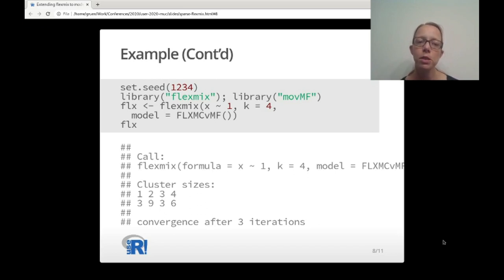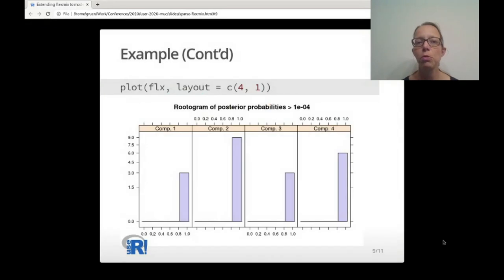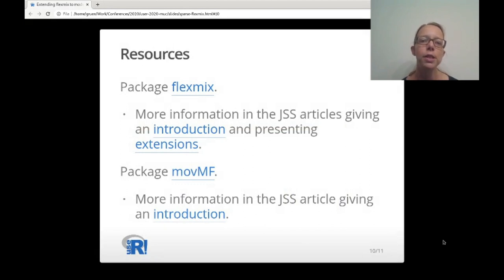Now that we have a FlexMix object, we can for example use the plot method to inspect the a posteriori probabilities. More information on the two packages is available on the web. Both are available from CRAN and there are also JSS articles available for both.